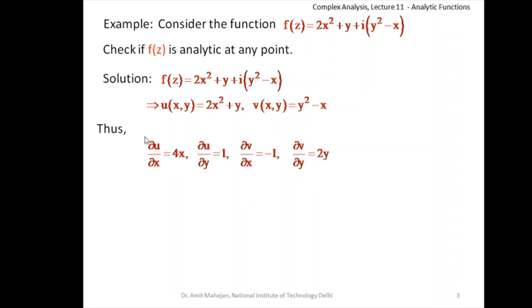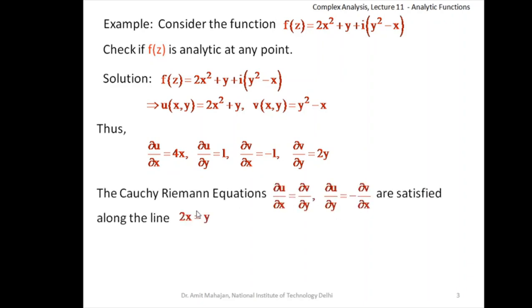The Cauchy-Riemann equations require that ∂u/∂x = ∂v/∂y, so 4x = 2y, meaning 2x = y. The second equation ∂u/∂y = −∂v/∂x gives 1 = −(−1) = 1, which is automatically satisfied. So the Cauchy-Riemann equations are satisfied along the line y = 2x. Because these partial derivatives are polynomials, they are continuous functions. So the Cauchy-Riemann equations hold along this line and partial derivatives are continuous, meaning this function is differentiable along this line only.